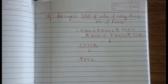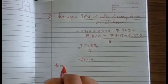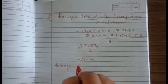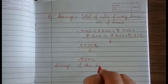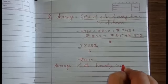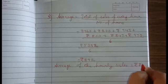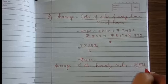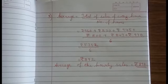The answer is Rs. 892. So we write the last statement: therefore, the average hourly sales is Rupees 892. Now take the screenshot and complete the sum.